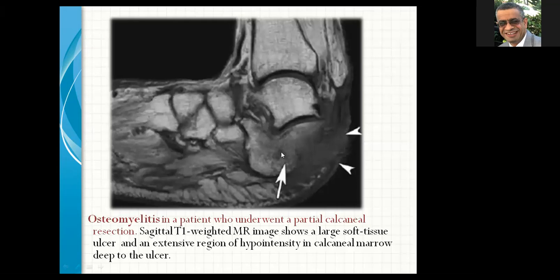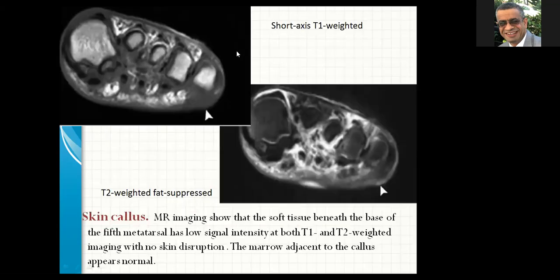Osteomyelitis in a patient who underwent partial calcaneal resection: a sagittal T1-weighted MRI image shows a large soft tissue ulcer and extensive region of hypointensity in the calcaneal marrow deep to the ulcer. Short-axis T1 and T2-weighted fat-saturated images show a skin callus. The soft tissue beneath the base of the fifth metatarsal has low signal intensity in both T1 and T2-weighted images with no skin disruption. The marrow adjacent to the callus appears to be normal.